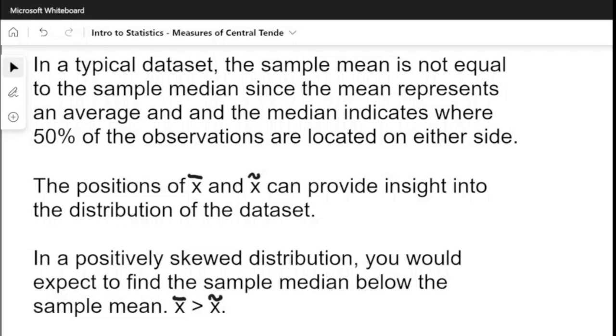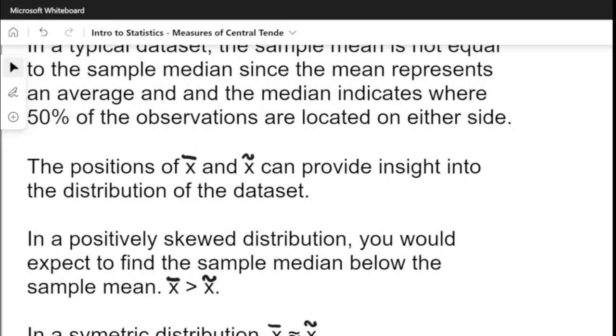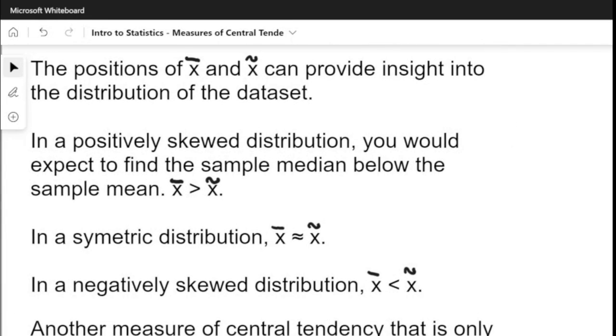In a typical data set, the sample mean is not equal to the sample median since the mean represents an average and the median indicates the position where 50% of the observations are located on either side. The positions of x-bar and the sample median can provide insight into the distribution of the data set.